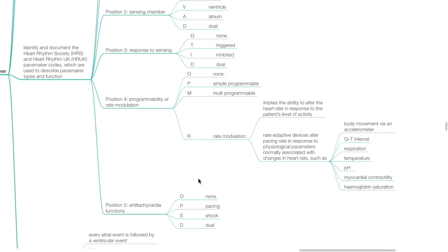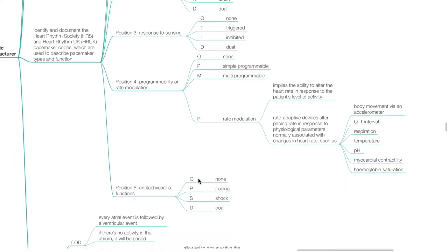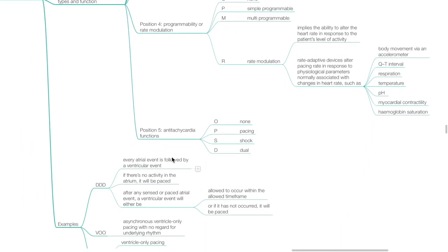Position 5 — anti-tachycardia functions — may be O (none), P (pacing), S (shock), or D (dual).